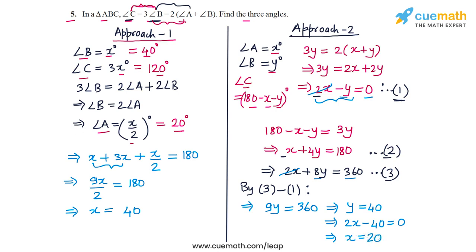So this means that angle A, x degrees, is equal to 20 degrees. Angle B, which is y degrees, is equal to 40 degrees. And angle C, which is 180 minus x minus y, this is equal to 120 degrees. So this is exactly the same answer that we obtained in approach one.